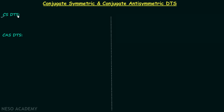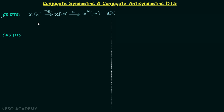To understand conjugate symmetric signals, let's take a discrete time signal xn and perform the time reversal operation, giving us x(-n). Next, we take the conjugate of this signal to obtain x*(-n). If this resulting signal equals the original signal xn, then xn is conjugate symmetric. So the condition is: after time reversal and conjugation, if you get the same signal, it is conjugate symmetric.